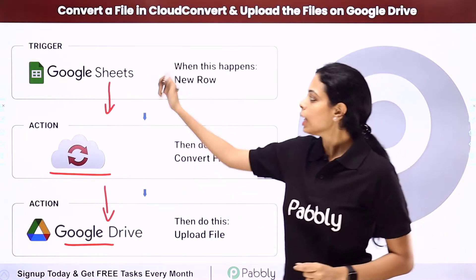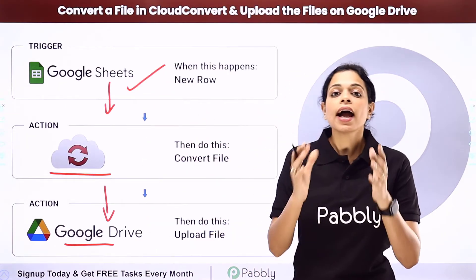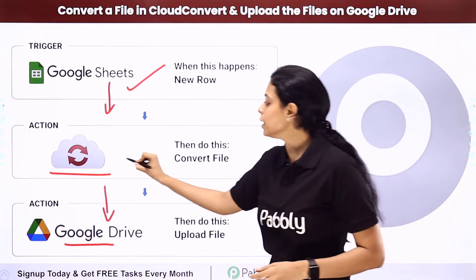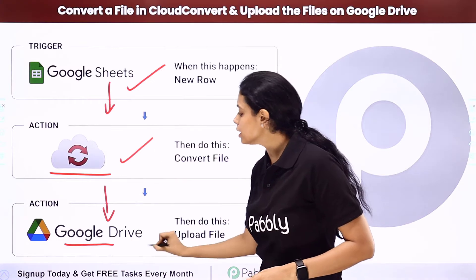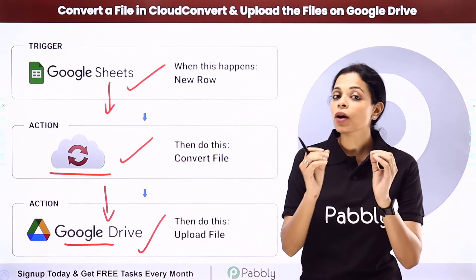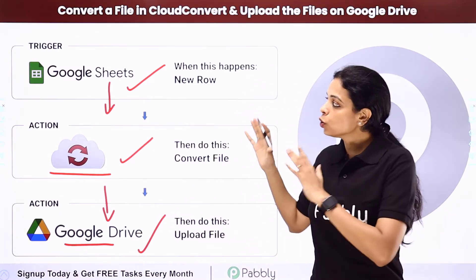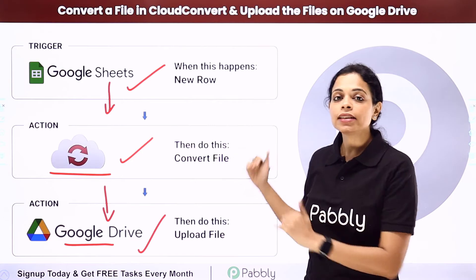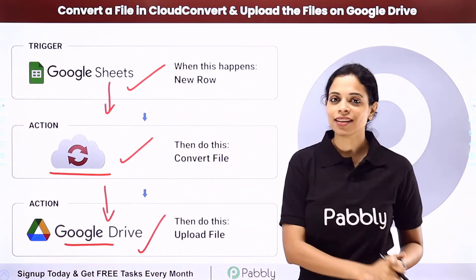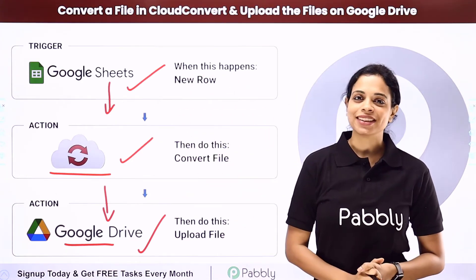Your trigger application would be Google Sheets, and your action applications would be Cloud Convert and Google Drive. How can you automate and integrate this entire process? To understand that, let me take you to my screen.